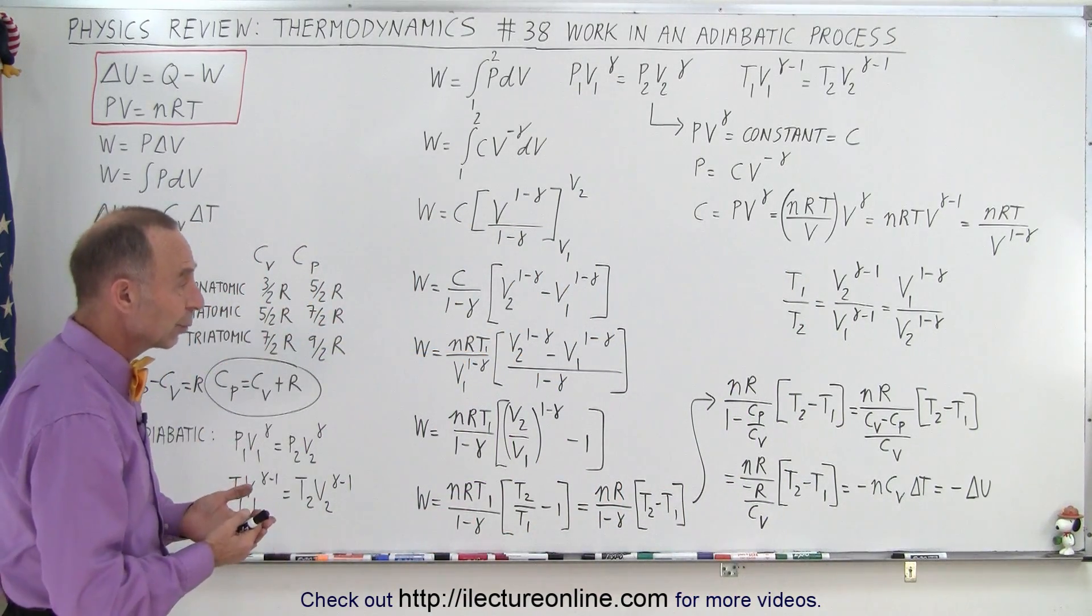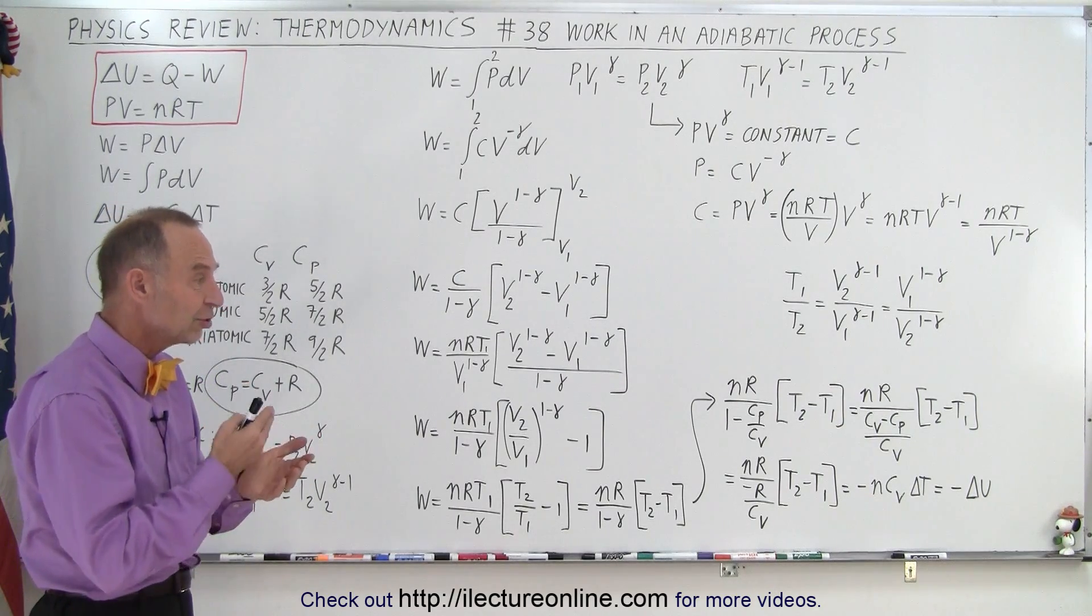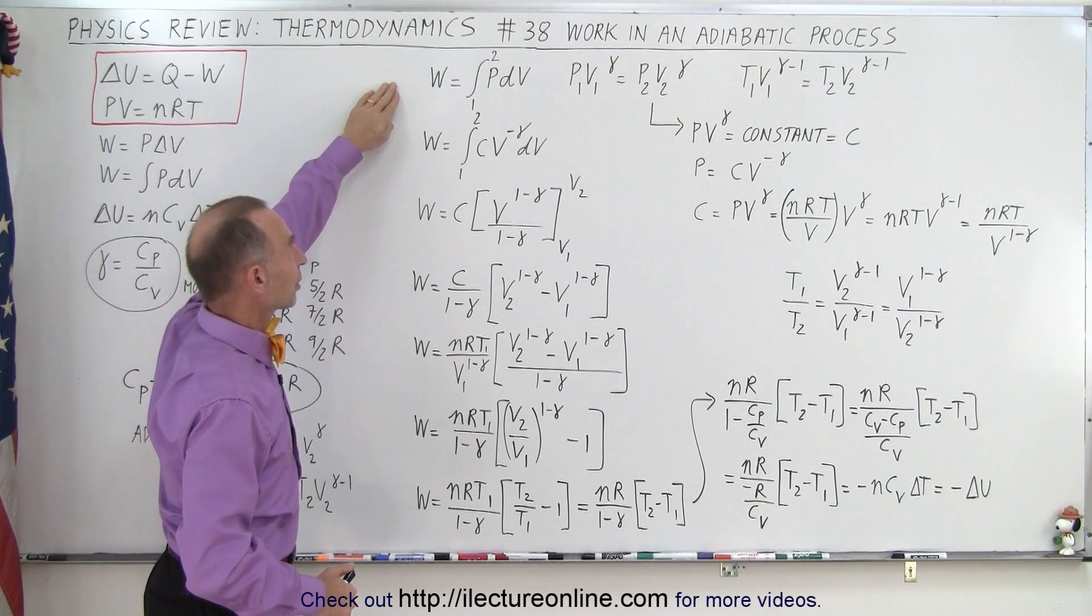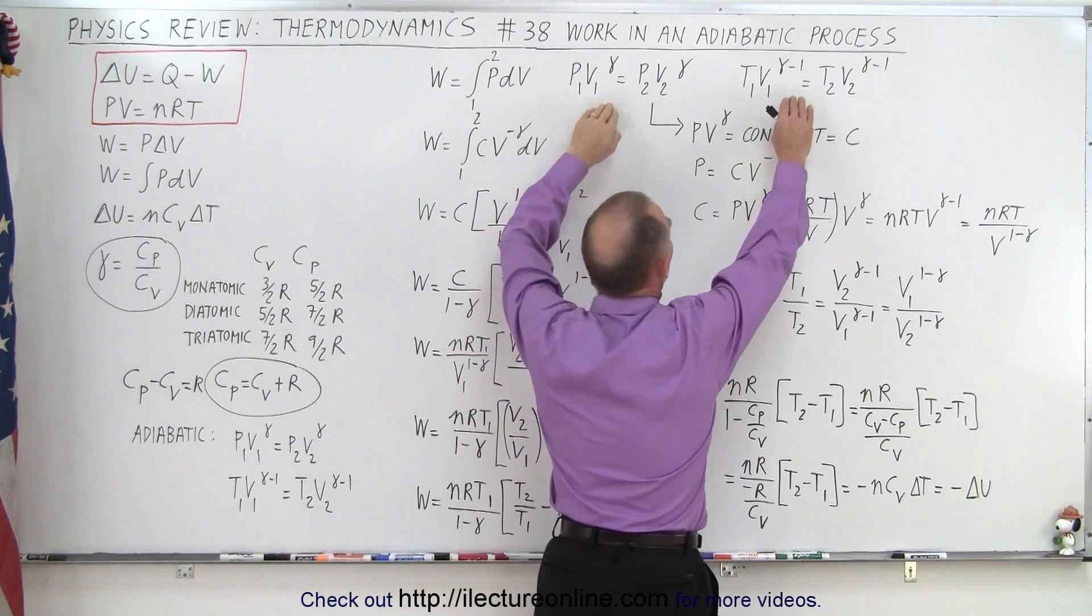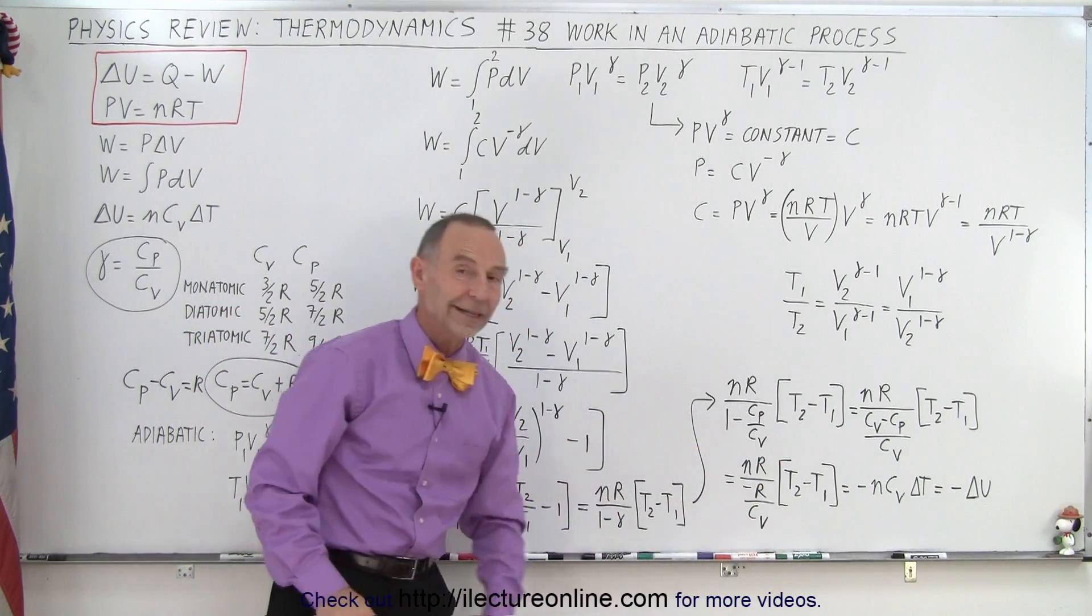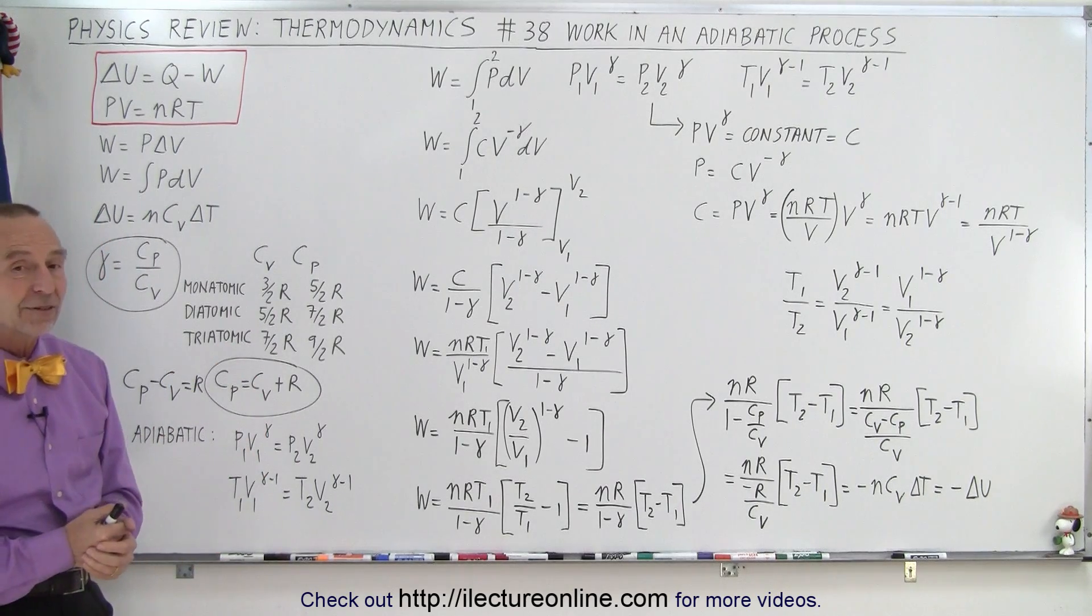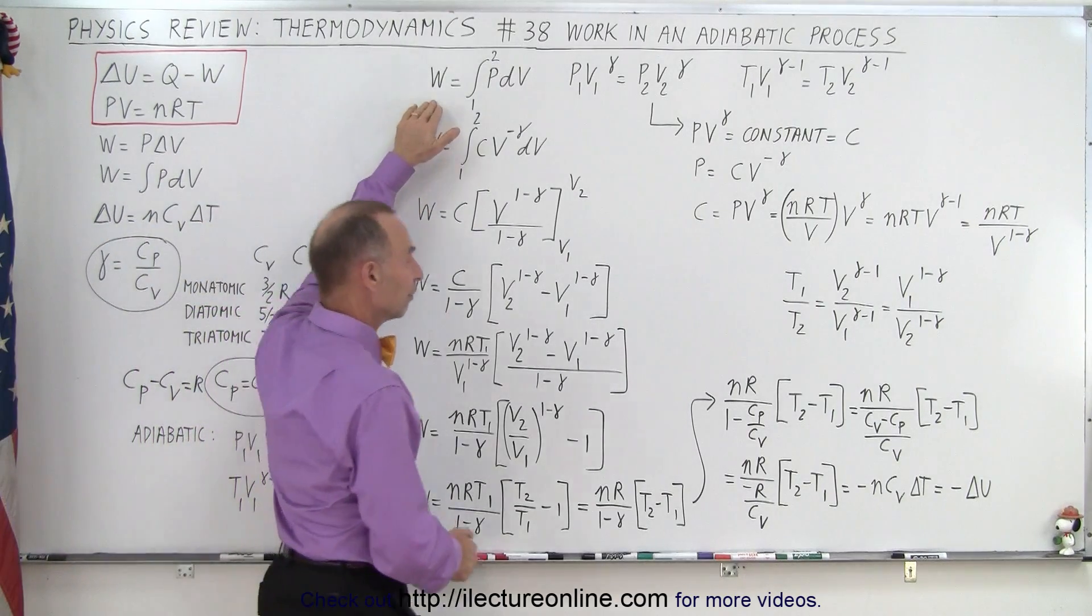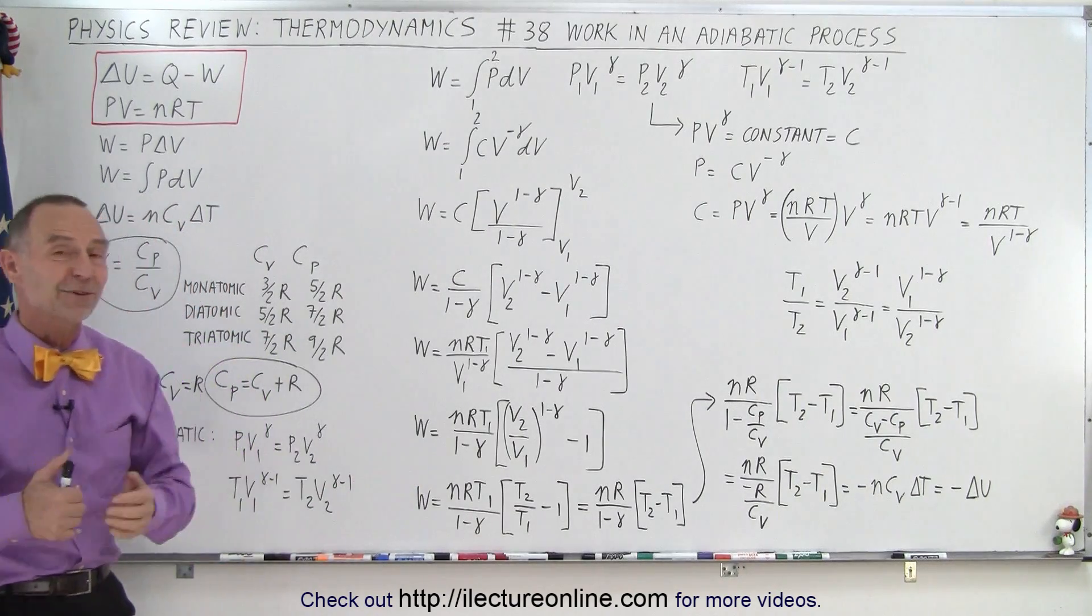So we come all the way around. We knew from the previous video that the work done was equal to the negative of the change in internal energy, but then you can see starting from the basic definition of work done in any thermodynamic process, and realizing the two equations that are relevant for any adiabatic process, we can show that that is indeed the case. And that is how we can look at the adiabatic process in a way that we probably haven't looked at before, realizing now that the work done must therefore equal the negative change of the internal energy. And that is how it's done.